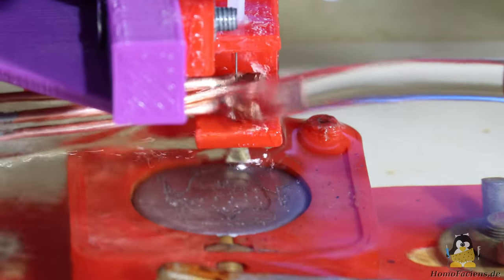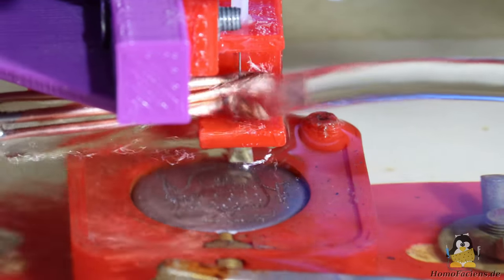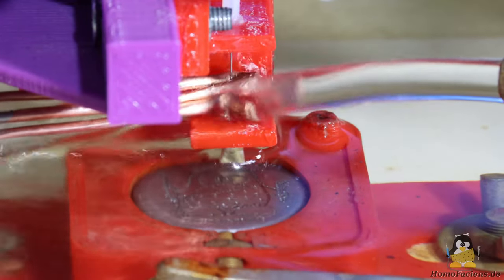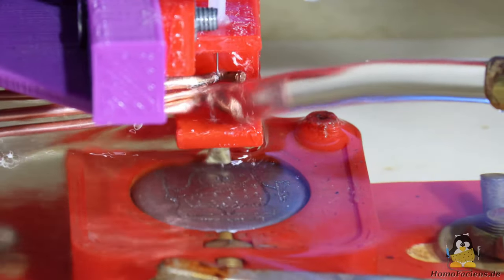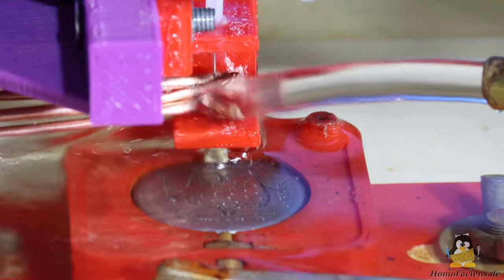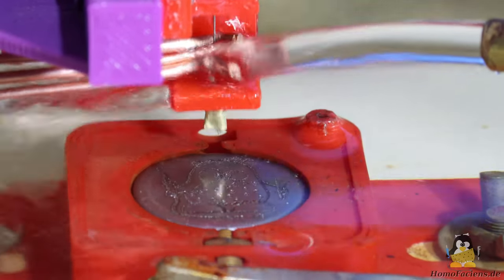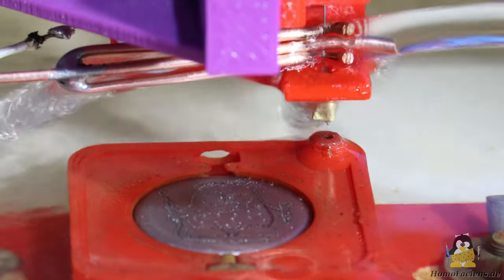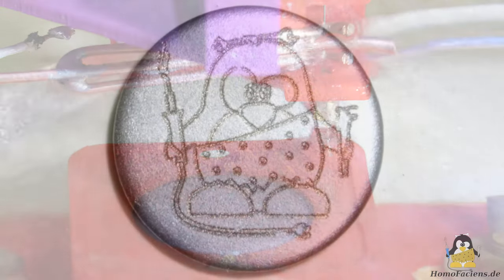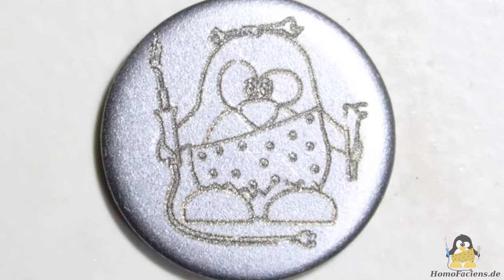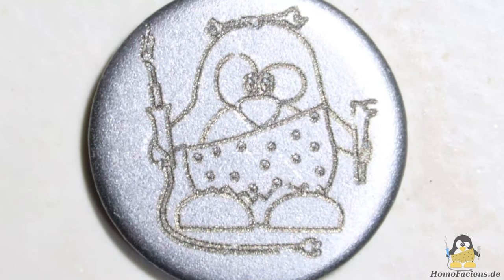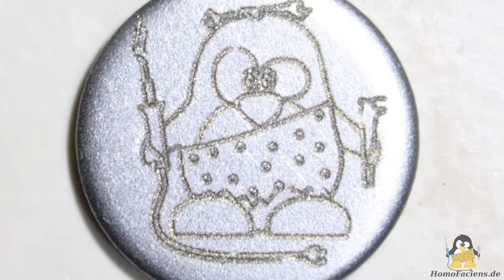Nevertheless, the engraving can be completed without the electrode wire breaking. The result is not bad, the engraved lines are very deep.